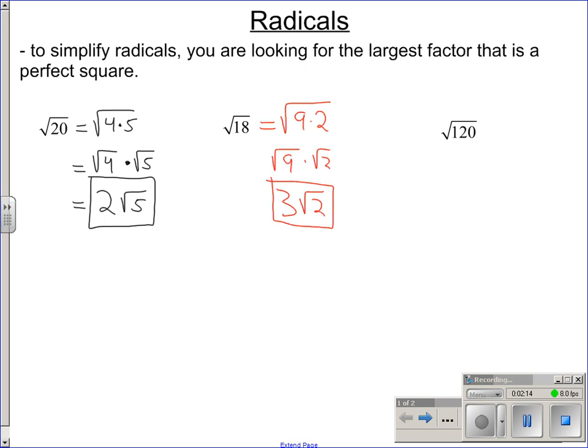For the last example, square root of 120. Sometimes, it's not an obvious factor that is a perfect square. So, what you can do is just look for factors. 120, I know 4 is a factor of that. It goes in there 30 times. So, now, just keep on breaking down your factors.